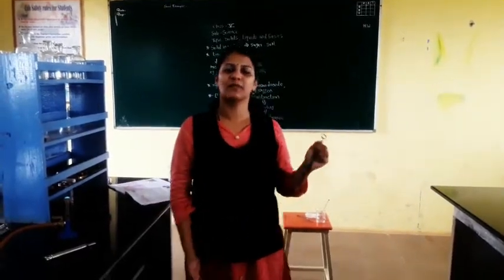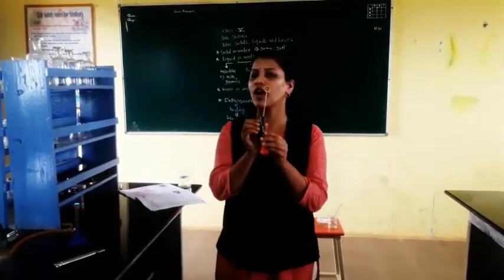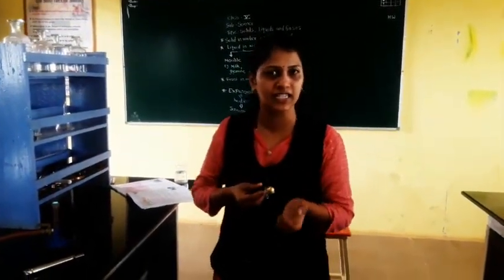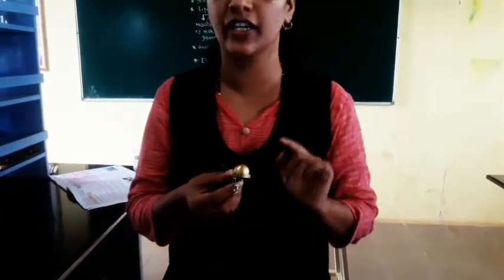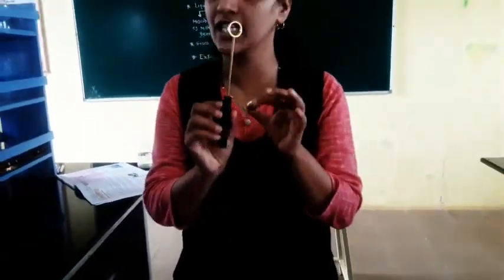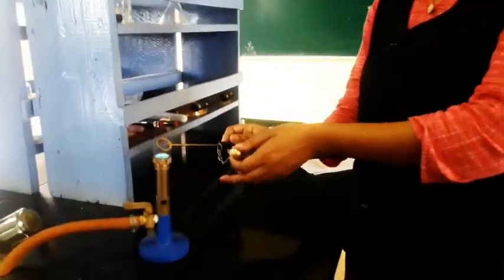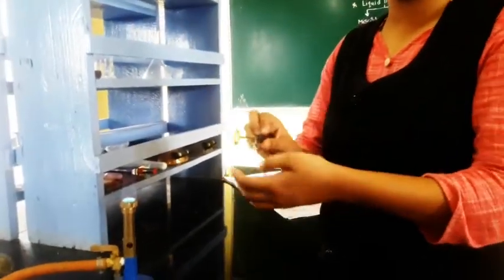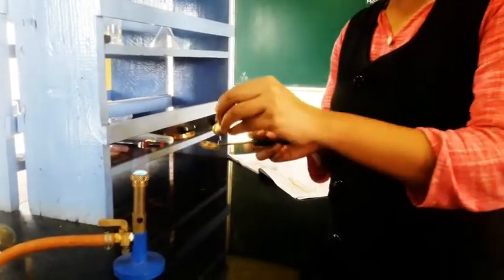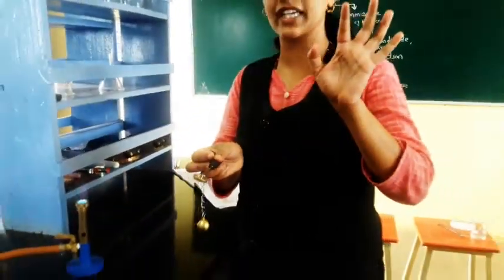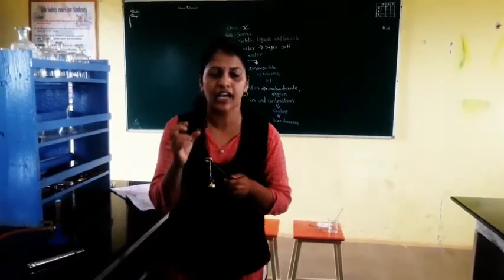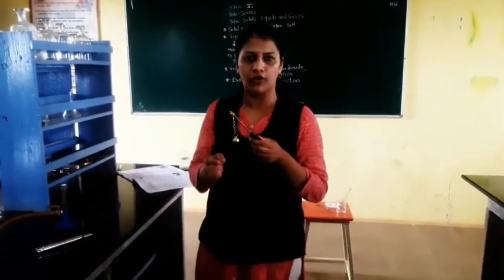Now we will start the ring and ball activity for expansion and contraction. This is a ring and this is a ball. First, we will see whether the ball goes easily through the ring — the ball is not going through easily. So we have to heat the ring. This is a burner. When I heat the ring, the ball goes through easily. Why? Because the ring has increased in size due to heating.